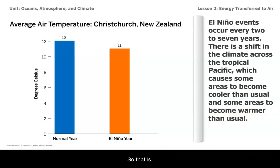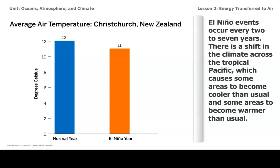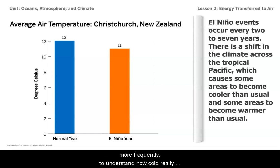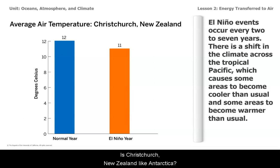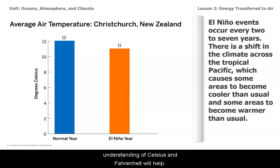That is a definition of what El Niño is, but it's hard for us when we use Fahrenheit more frequently to understand how cold 12 degrees Celsius really is. Is it like super cold, like Antarctica? Is Christchurch, New Zealand like Antarctica? Having a better understanding of Celsius and Fahrenheit will help.